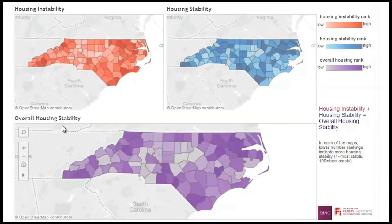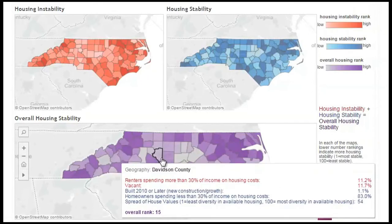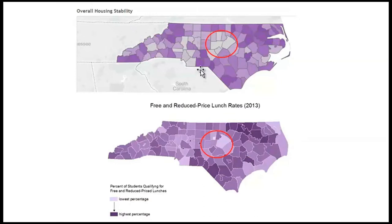Finally, I combined the stability and instability maps to create an overall housing stability map, which appeared to track with a map of percentage of students receiving free and reduced-price lunches that I created late last year, indicating that housing stability is somewhat aligned to this oft-used measure of student poverty. Though there's not a perfect one-to-one relationship, it's hard to deny that the two maps resemble one another.